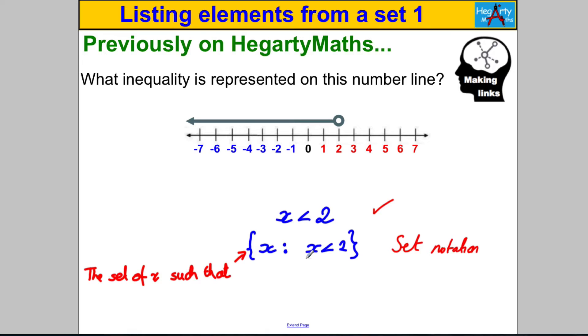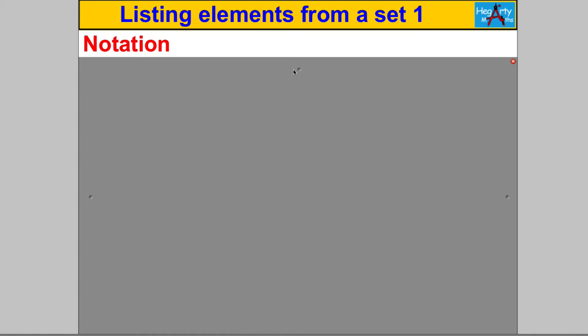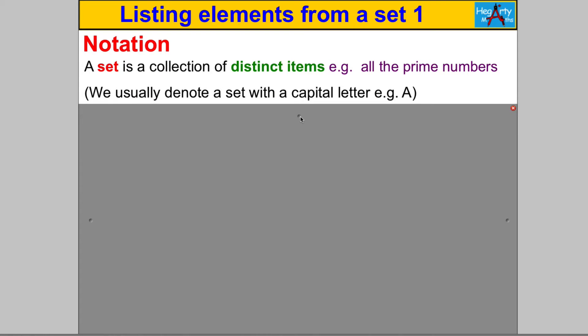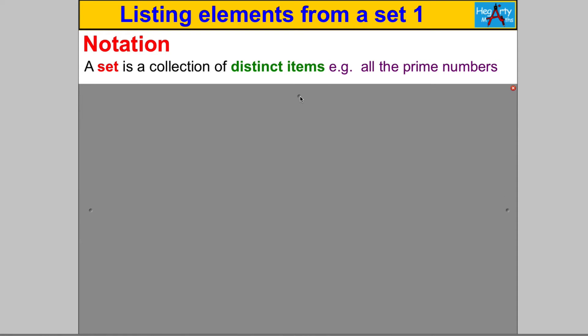That's what we're talking about in this particular skill. I just wanted to show you we've already touched upon it. So let's get going and start talking about some set notation and some words we need to learn. To start with the notation, a set is a collection of distinct items, for example all the prime numbers.